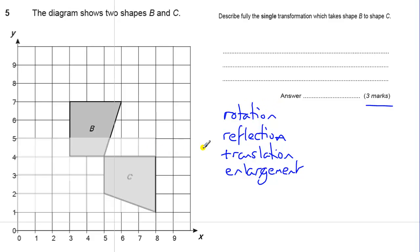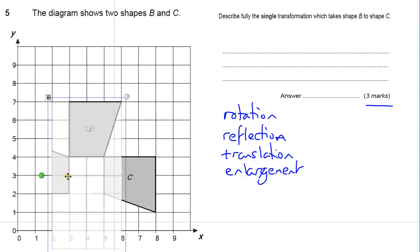Now this one is a rotation. I'll just show you. When you're looking for a rotation, it's best to use tracing paper. Some people can see this straight away, but it's best to use a bit of tracing paper. If you trace one shape, so we're going to try and take shape B onto shape C. So there's shape B.